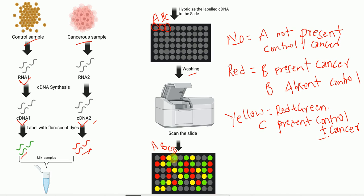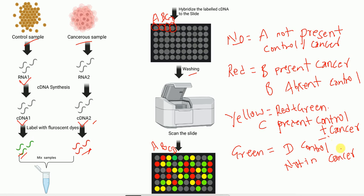The green spot corresponds to a spot with sequence complementary to gene D. The green color comes from the control cDNA, meaning only the cDNA from the control sample bound to this spot, but not the cDNA from the cancer sample. Hence, gene D is expressed in the control sample but not in the cancer sample. Also, even though not shown here, the intensity of the color will indicate the expression level of a particular gene.